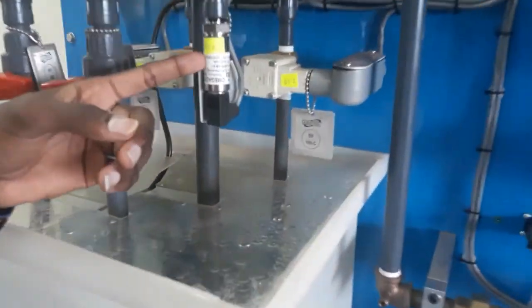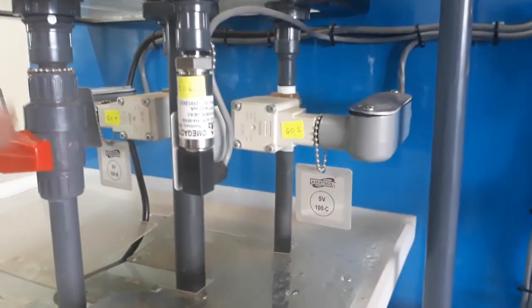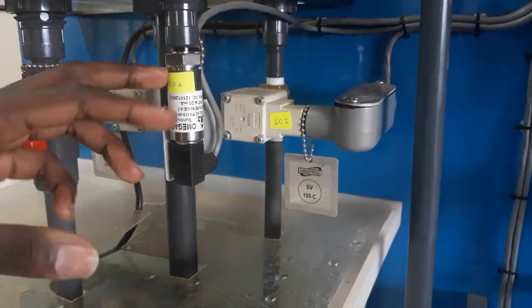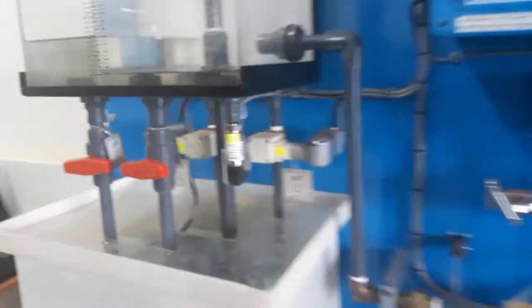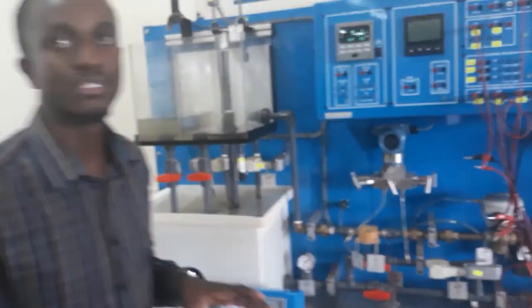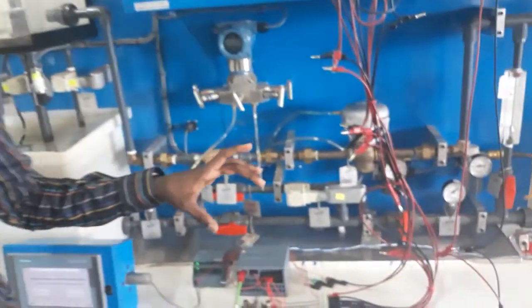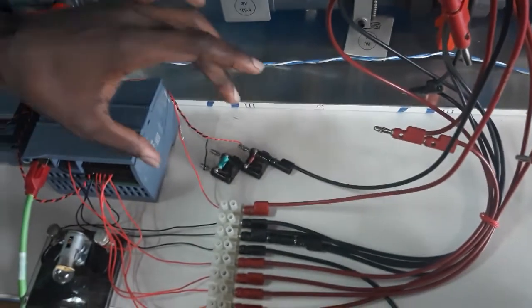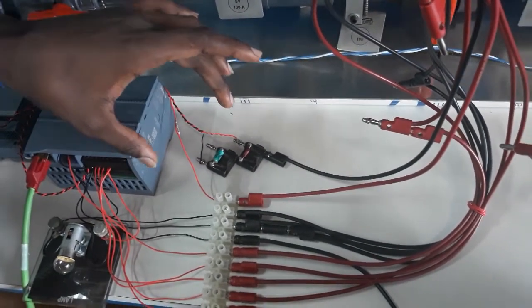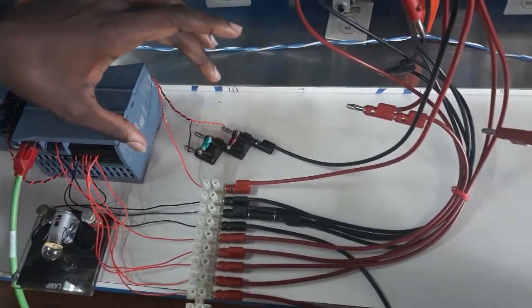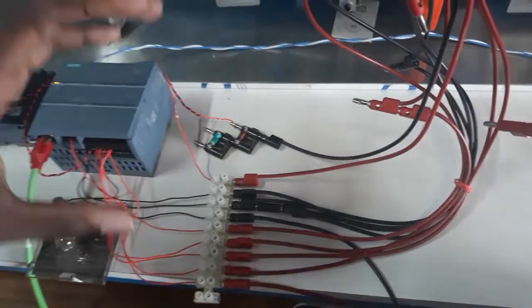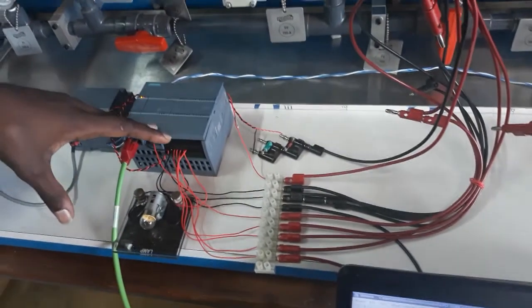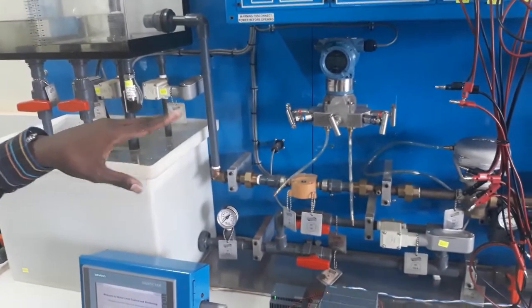This is our first input, an analog input, a pressure sensor. This analog input gives a current signal to the PLC, and the PLC requires a voltage signal. So from the analog input, we have to connect it via a 500 ohm load. Using Ohm's principle, V equals IR, from the load we can get a voltage value which goes straight to the PLC. The analog input is connected to port 64 of the PLC.